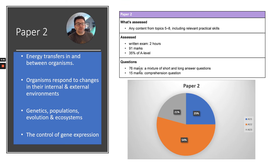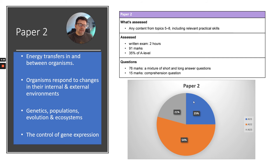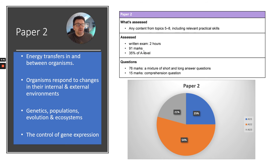Paper 2 includes energy transfers, organisms responding to changes in internal and external environments, genetics, populations — that's inheritance — evolution and ecosystems, and control of gene expression including gene technology. What you'll notice with paper 2 is there's a much smaller amount of AO1 and a lot of AO2. That means in the exam there'll be lots of information, lots of question stems to read, and lots of data. You have the same time — 2 hours, 91 marks, 76 marks of short and long answer, and 15 marks is a comprehension question where they give you lots of information and data to look at.